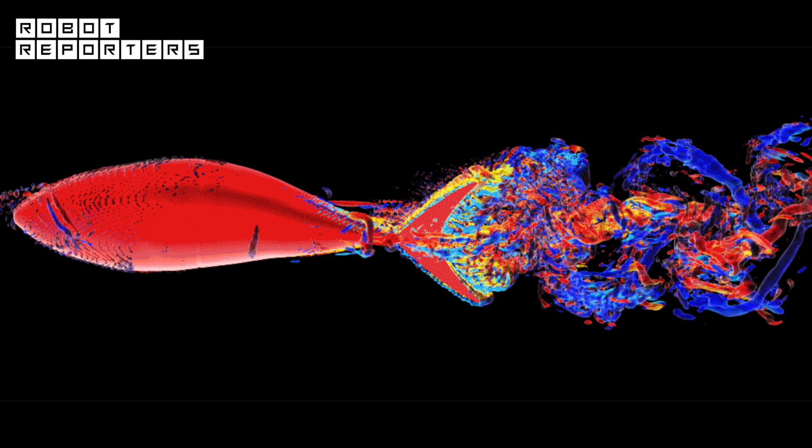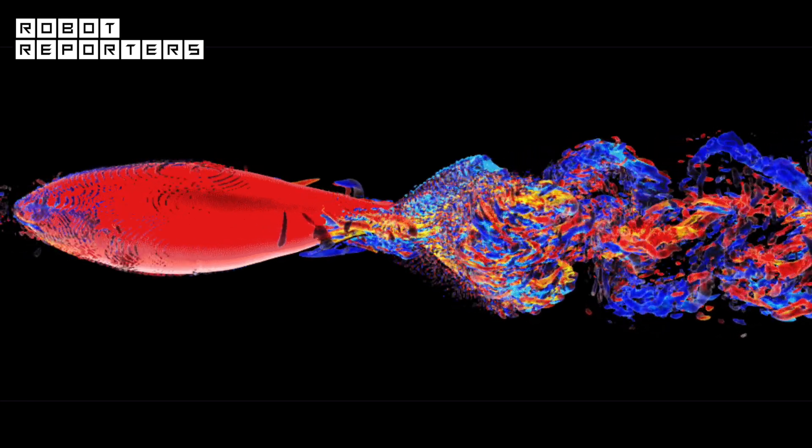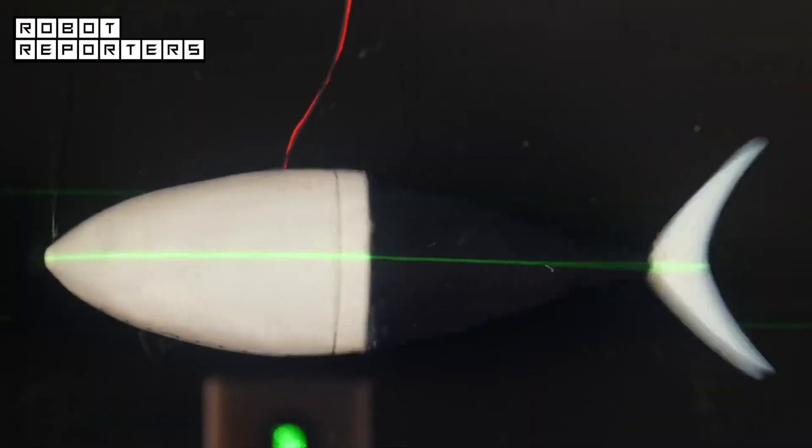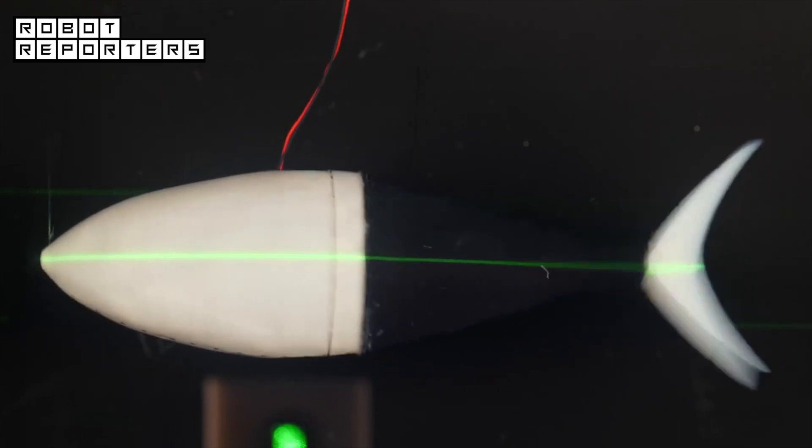As the current of water in the flow tank speeds up, Tunabot's tail and whole body move in a rapid bending pattern, similar to the way a live yellowfin tuna swims.